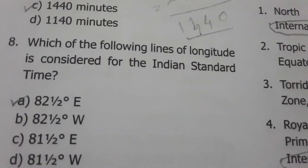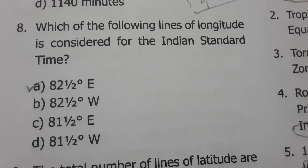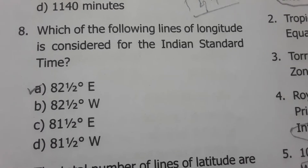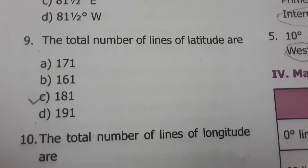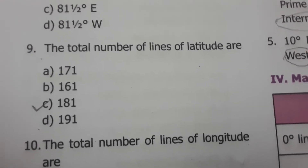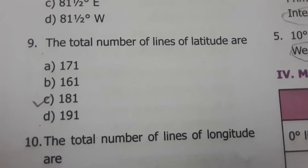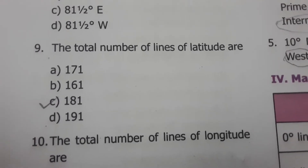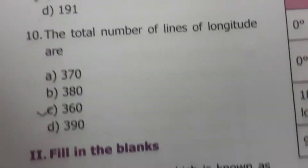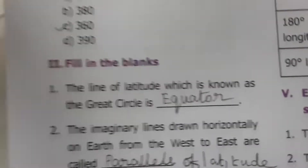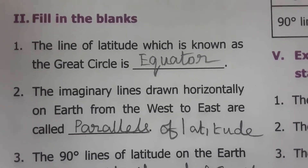The line of longitude considered for the Indian Standard Time is 82.5 degrees East. The total number of lines of latitude are 181 — this is a very very important question to remember. The total number of lines of longitude are 360. So remember: latitudes 181, longitudes 360.